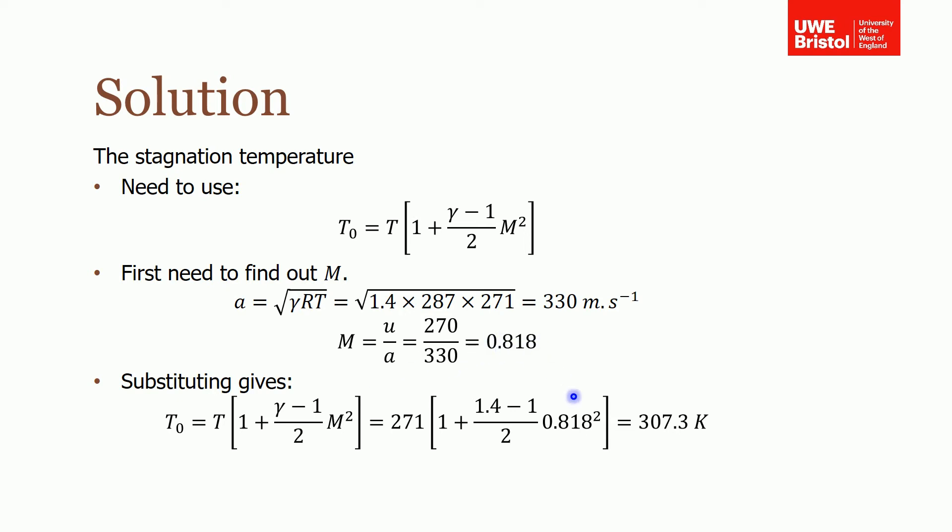We can then substitute that into the equation for stagnation temperature. We know everything now: put in the temperature of the fluid at that point, gamma, and the Mach number. This gives a stagnation temperature of 307.3 Kelvin.